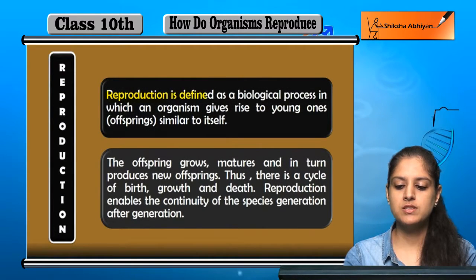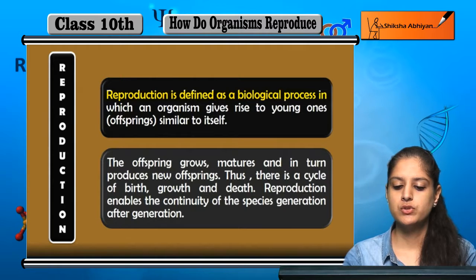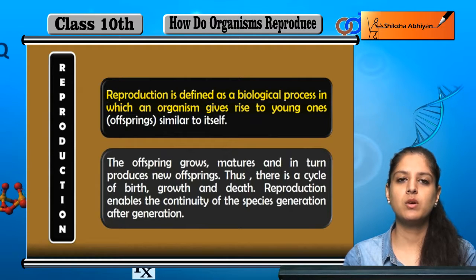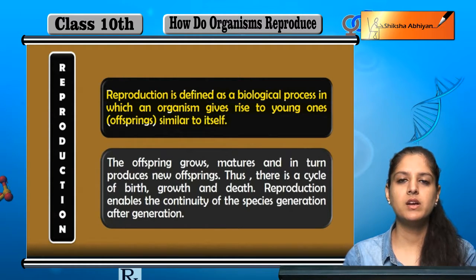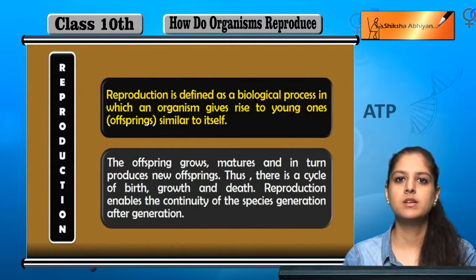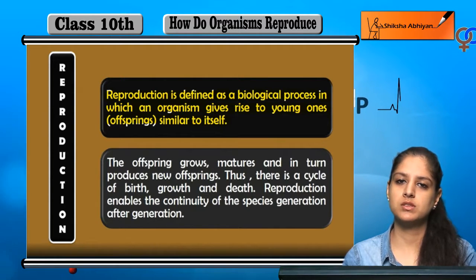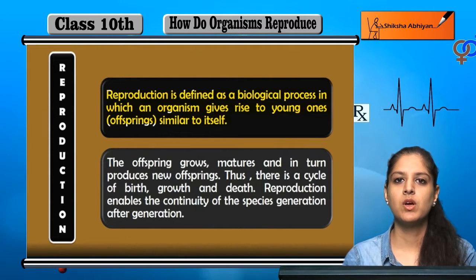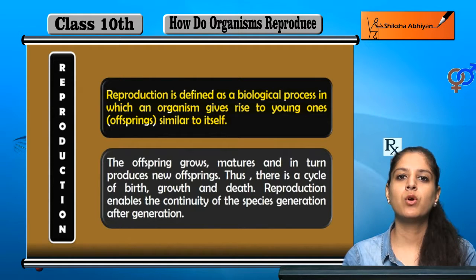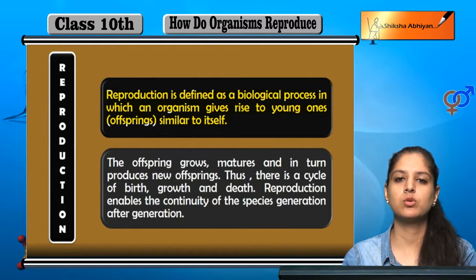Reproduction is defined as a biological process. Yeh ek biological process hai jiske andar ek organism, chahi woh koi bhi organism ho, it gives rise to young ones or offsprings similar to itself. Jiske andar ek organism new young ones ko birth deta hai ya produce karta hai kisi bhi form se, kisi bhi method se. Aur woh jo new young ones produce hote hain, woh parent ke similar hote hain, us organism ke similar hote hain jisne unko produce kia hai.